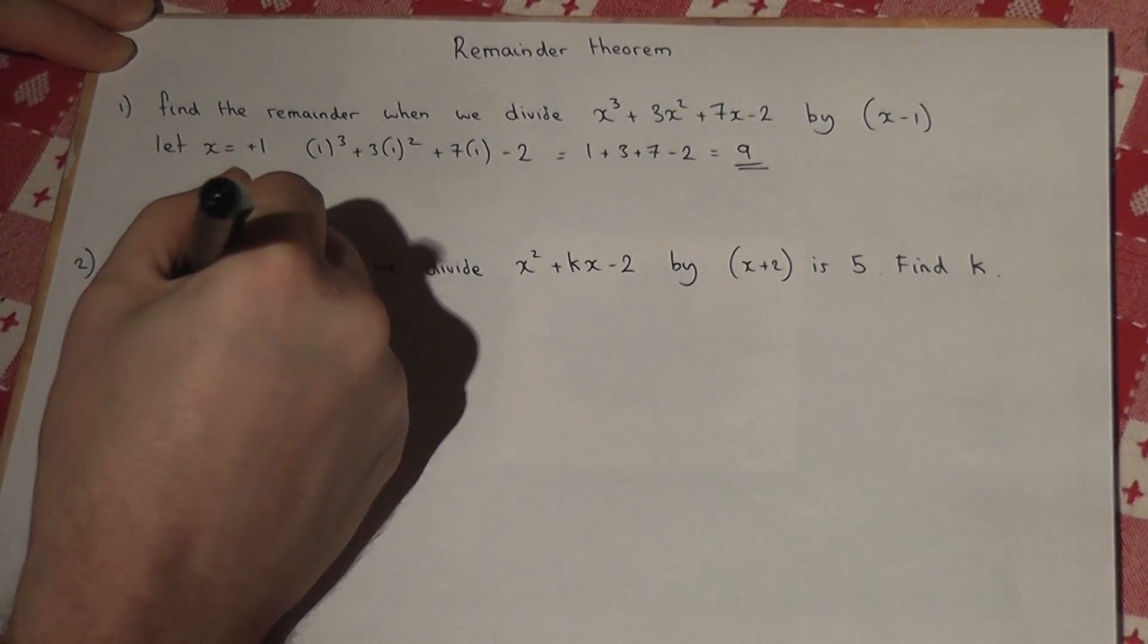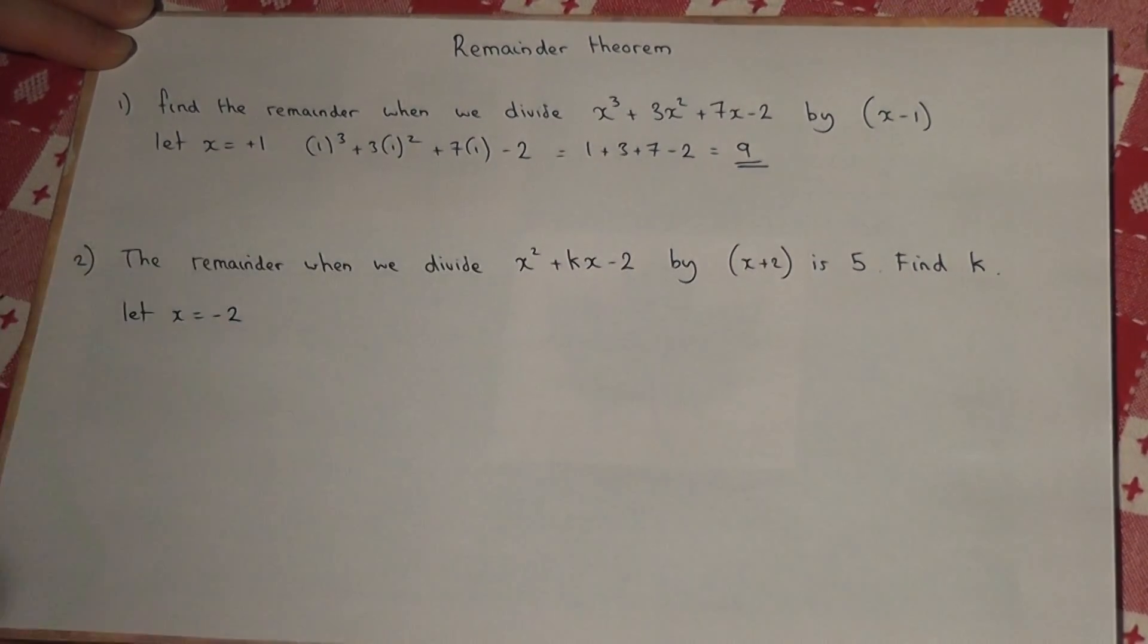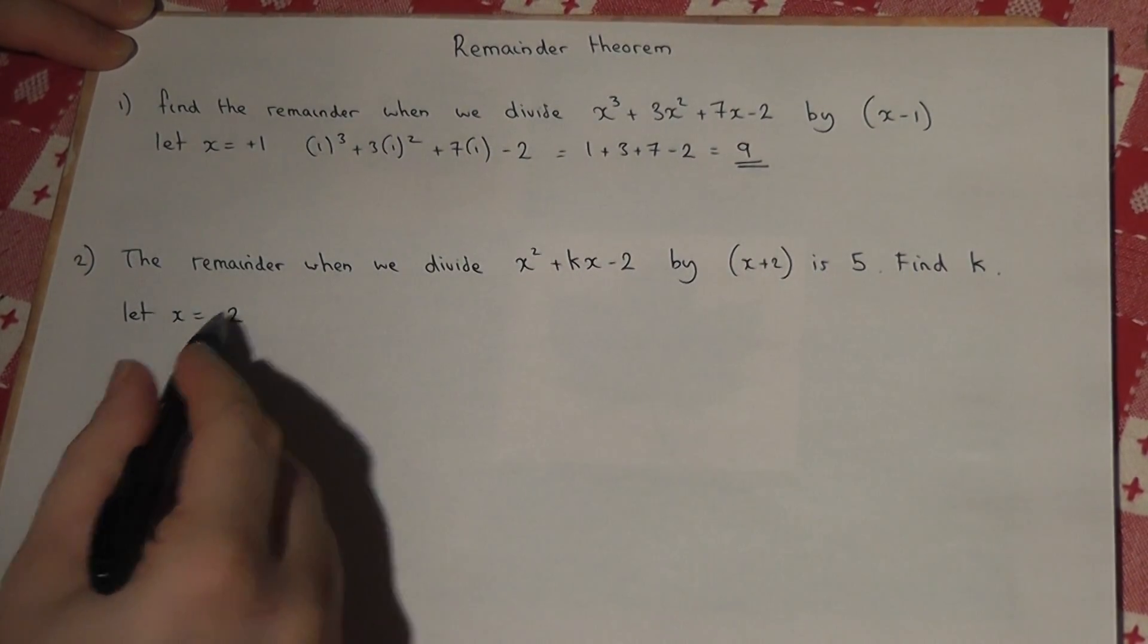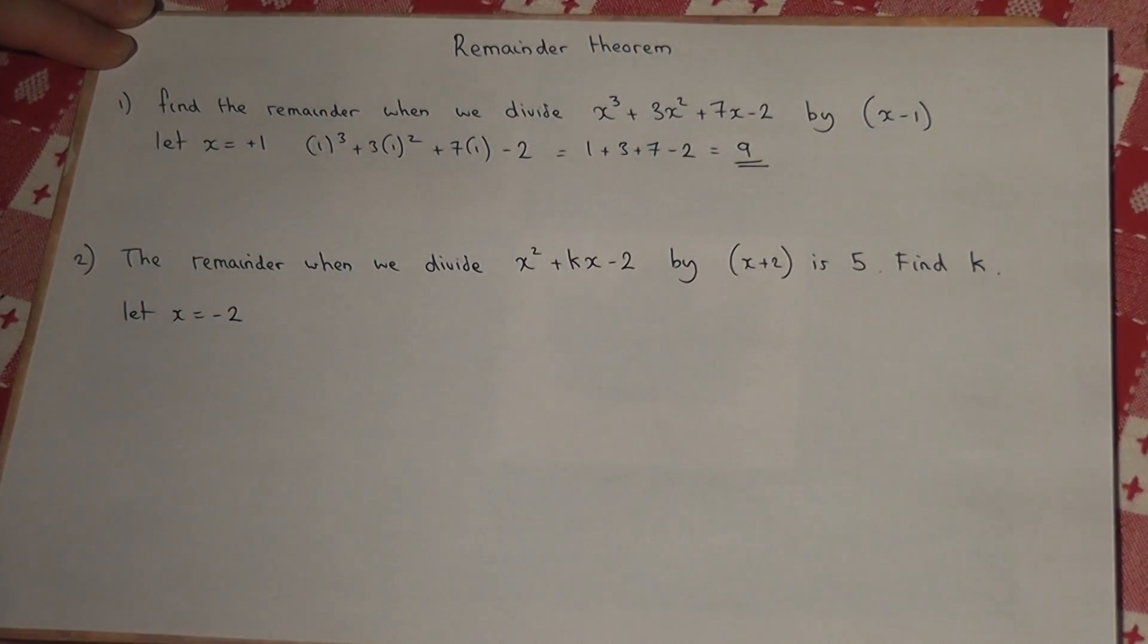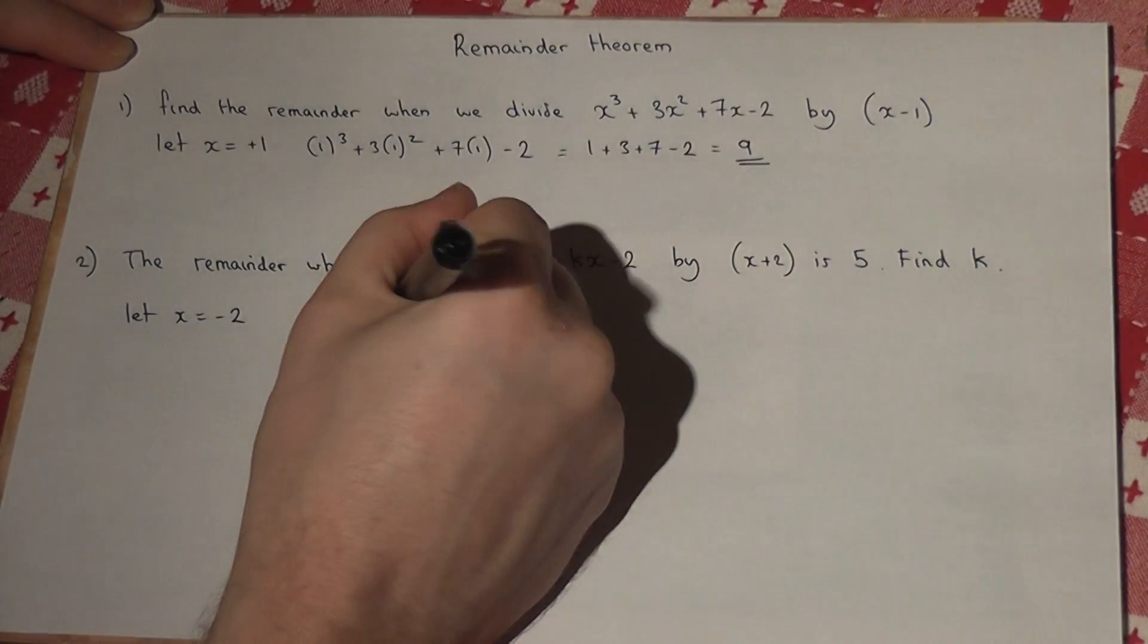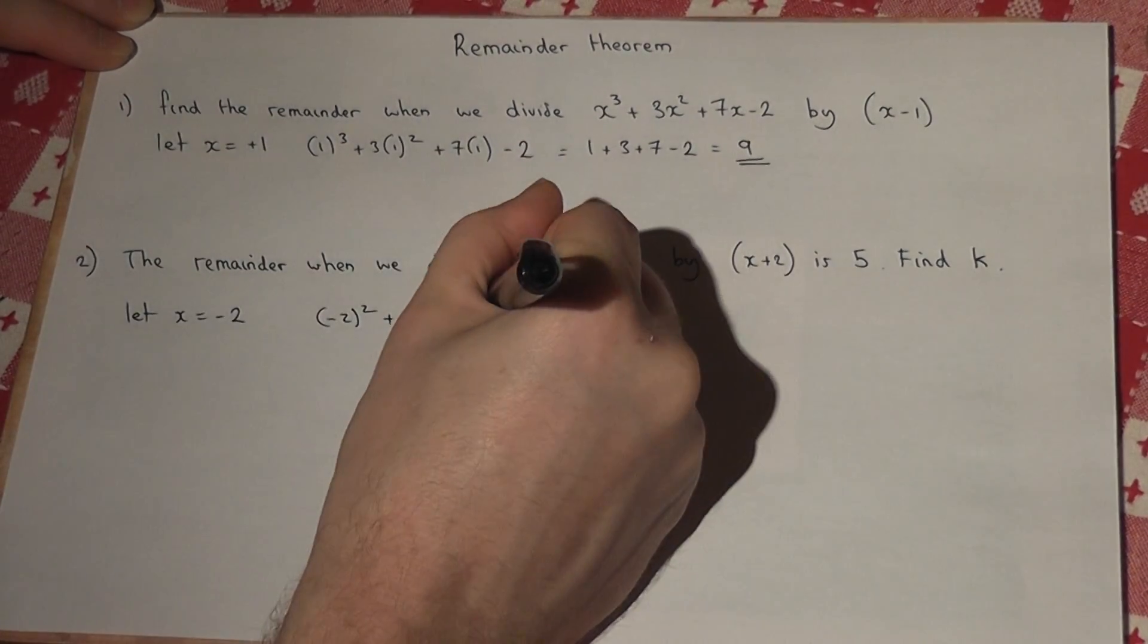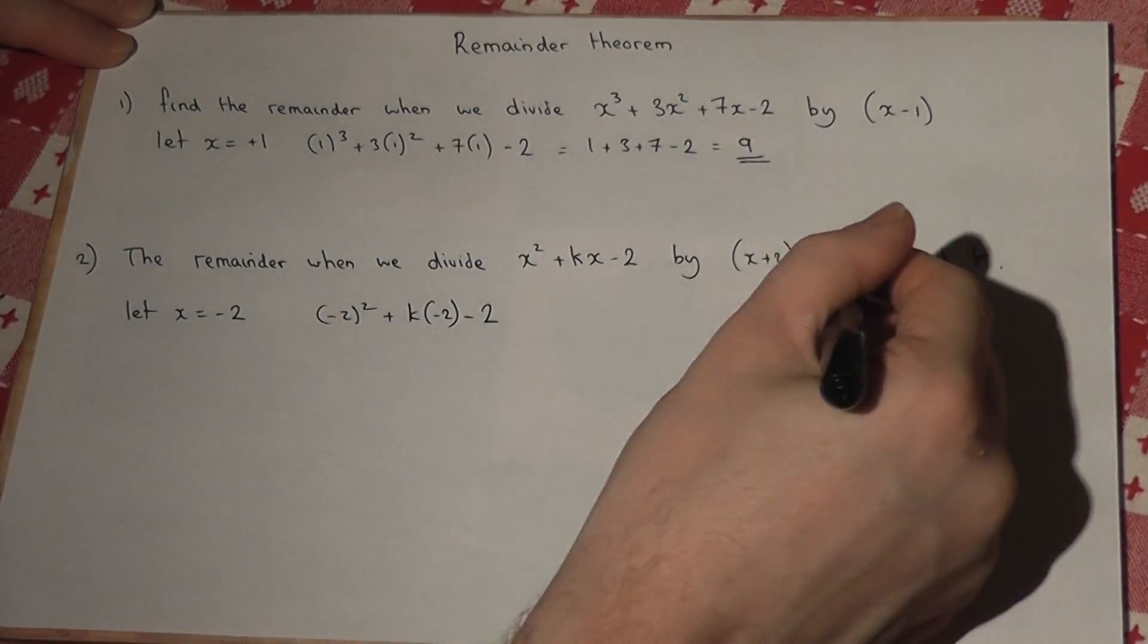So using the remainder theorem, if we let x equal not plus 2 but minus 2, and if we put this value into this function, so minus 2 squared plus k lots of minus 2, take away 2, then that should equal the remainder.